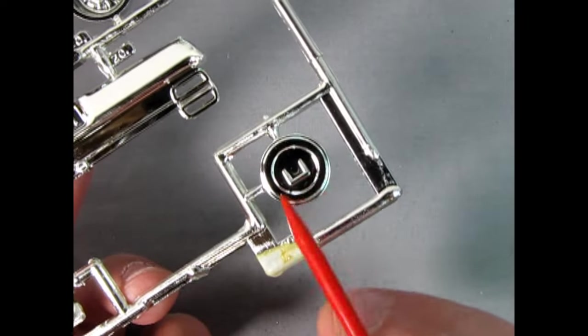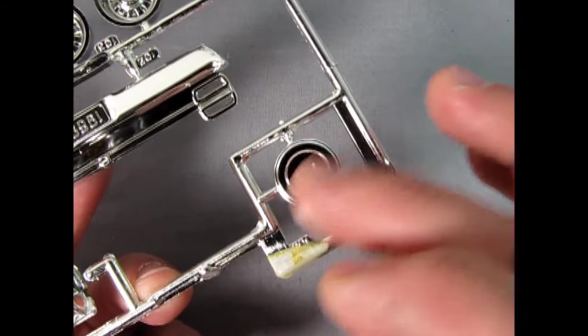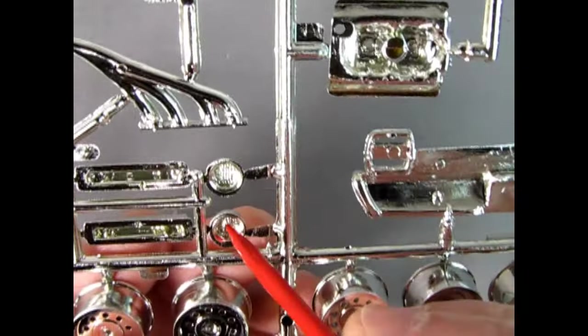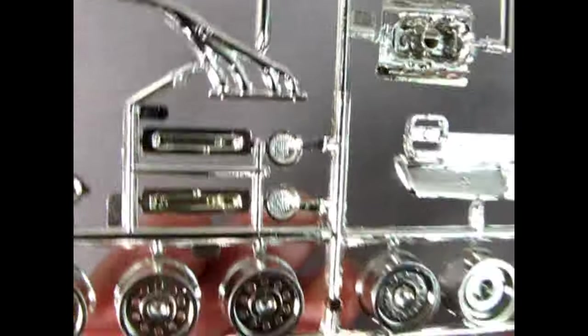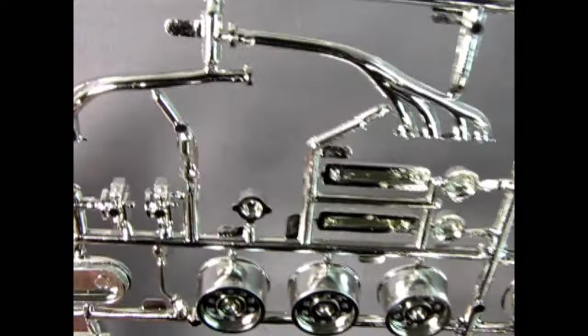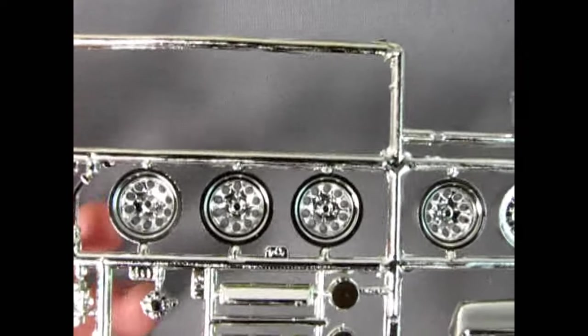And then here we have the Ram Air hood. This is the air cleaner for that Ram Air hood. And that of course would sit on our stock carburetor. Here we have velocity stacks with a mesh molded inside them. So a little bit of a black wash will bring that out nice. Again, really cool looking chrome parts tree.